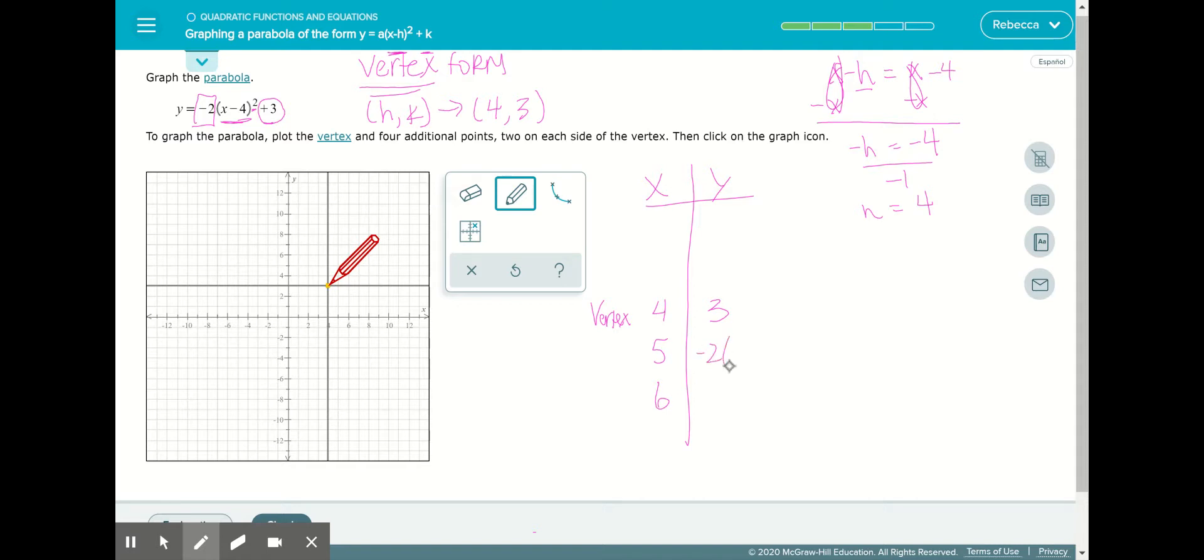We're going to take negative 2, replace the x with 5, and minus 4 squared plus 3. So we have negative 2 times 1 squared plus 3. 1 squared is 1, 1 times negative 2, and then add 3 gives us 1.